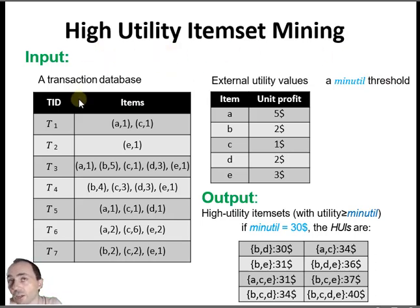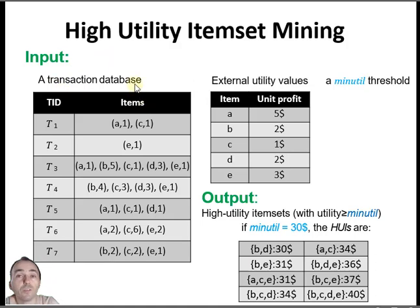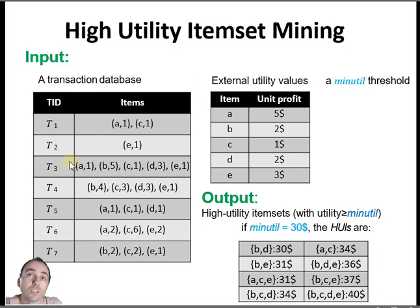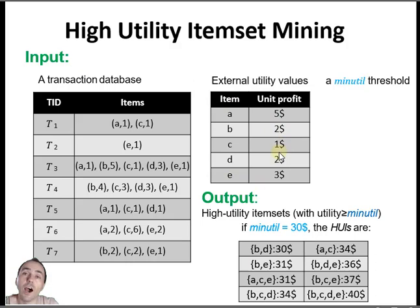In high utility item set mining, the input is a transaction database, but it is a little different. Here in the transactions, we have what people have purchased, but also some numbers that represent quantities. For example, the first transaction says someone bought 1 apple and 1 cake. Transaction 3 has 1 apple, 5 bread, 1 cake, and so on.